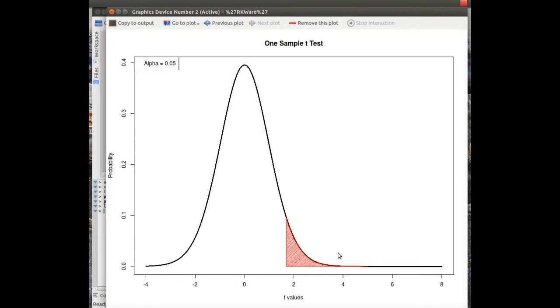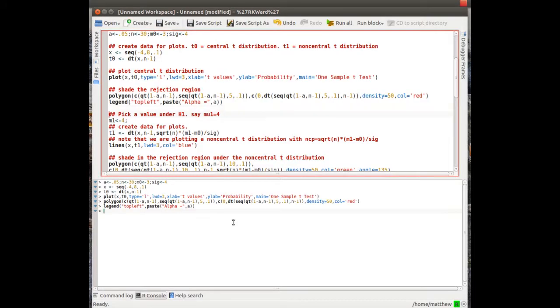But to calculate power, we have to assume the alternative is true. The probability that we reject the null hypothesis, given that the alternative is true. So we assume a value in the alternative region and plot the distribution of the test statistic, which is a non-central t-distribution, and calculate the area under the curve. Let's do that. Let's pick a value of 4, which is greater than 3.